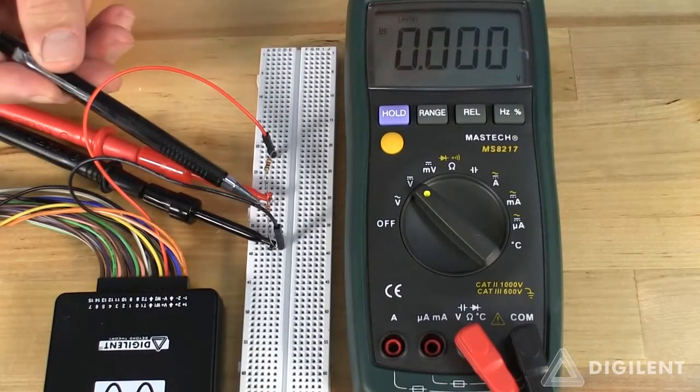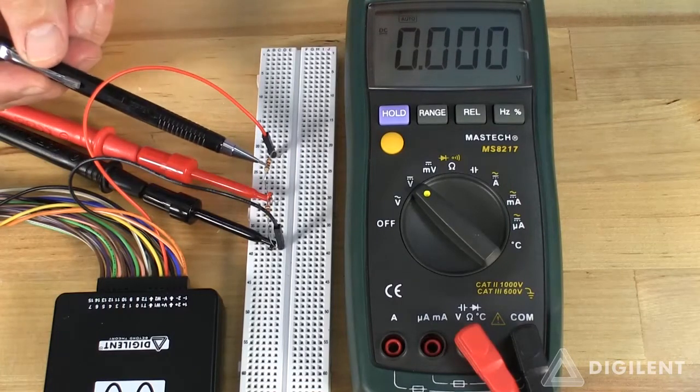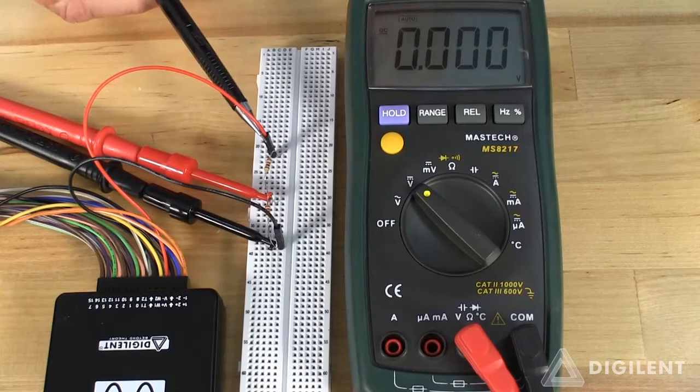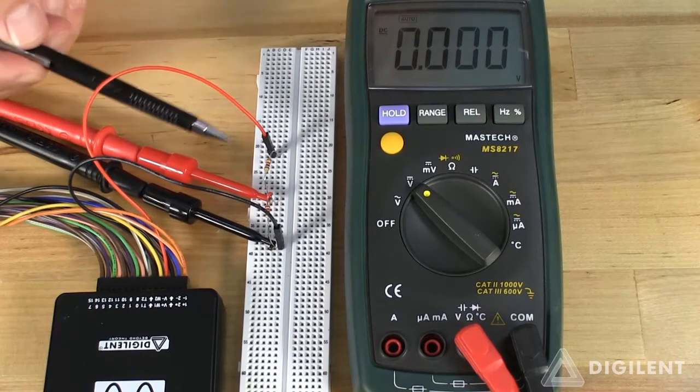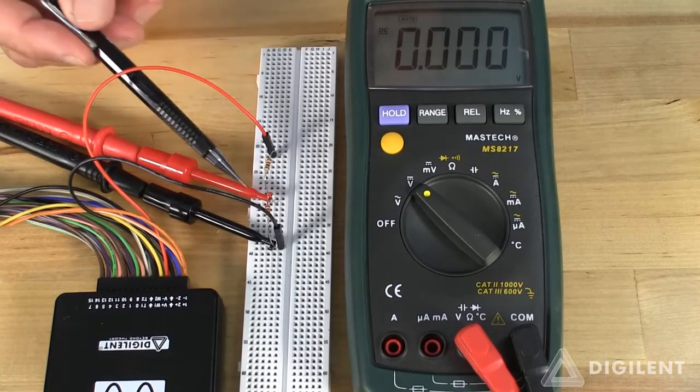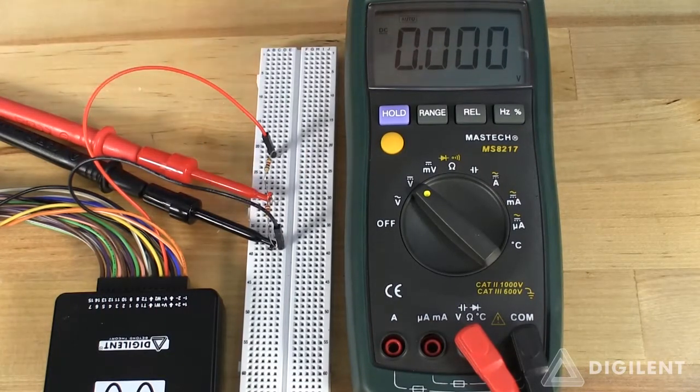Here's our circuit. This is our 2.2 kilohm resistor. This is the 1 kilohm resistor. We're using the analog discoveries V plus voltage supply to apply 5 volts across these two terminals. Our DMM is being used to measure the voltage across the 2.2 kilohm resistor.